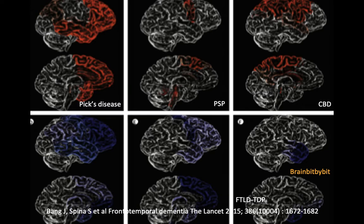Without looking too closely at the details, some patterns can be recognized. These are the TDP patterns and the tau pathology patterns. Progressive supranuclear palsy is a tau pathology with involvement of the frontal lobe and midbrain, and was previously classified as a Parkinson-plus syndrome. We will have a closer look at PSP next time.